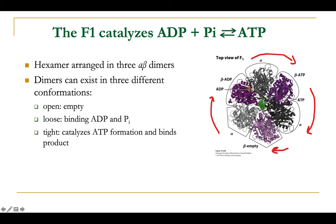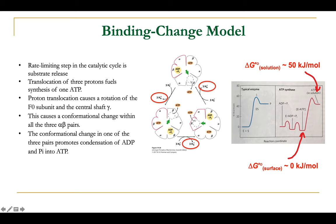In the second position, the beta subunit can bind ADP as substrate. In the third position, the beta subunit is bound to ATP. By rotating the shaft against this triple dimer, each alpha-beta subunit is sequentially switched between empty, loose, and tight conformations — first empty, then acquiring ADP substrate, catalyzing ATP production, releasing the produced ATP, and returning to the empty state.